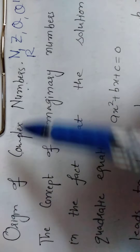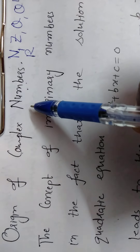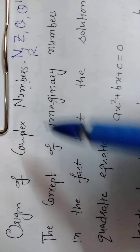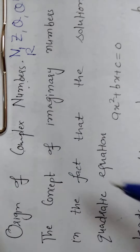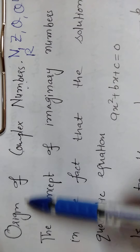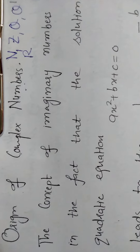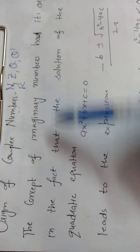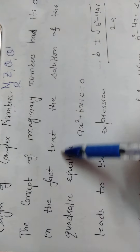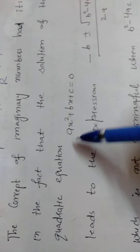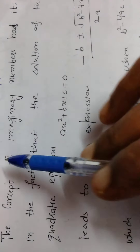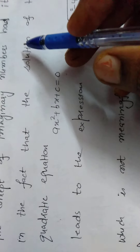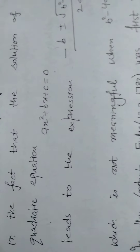We will discuss how complex numbers came into existence and why we thought about them. What is the origin of complex numbers? The concept of imaginary numbers has its origin in the fact that the solution of the quadratic equation — that is why we have thought about these numbers — is due to the solutions of quadratic equations.